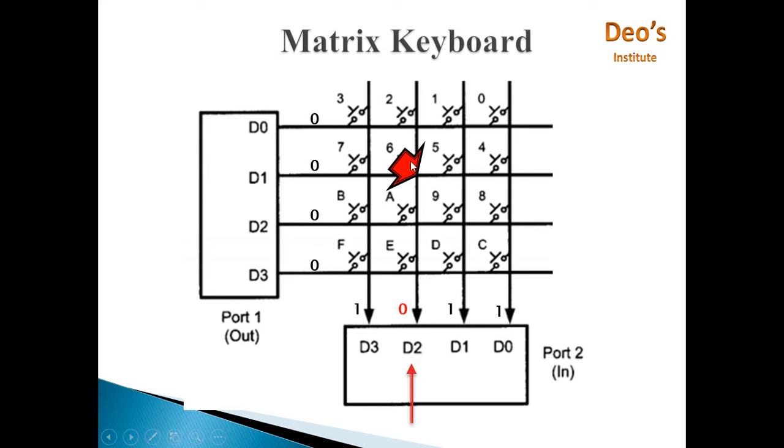Consider that key number 6 is pressed. So as key 6 is pressed, this D1 line and D2 line will get shorted, and this D2 will get the 0, means D2 will get connection to ground.